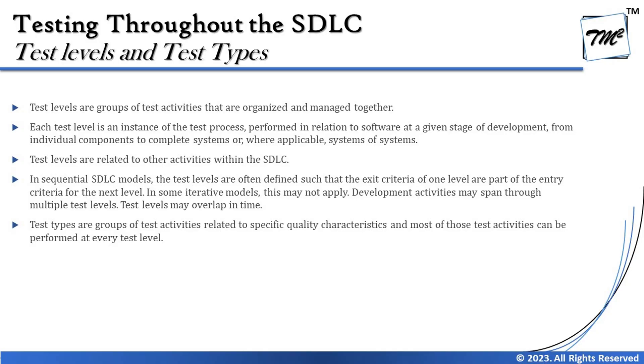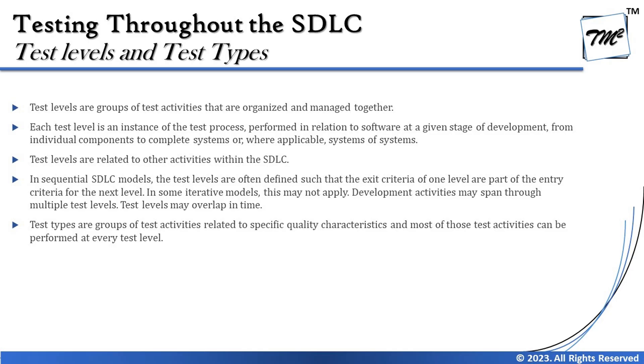Each test level is an instance of the test process itself, performed in relation to software at a given stage of development — from individual components to a complete system, or even systems of systems. All levels have a unique objective. As discussed in our previous topic, one good practice of testing states that every test level must have a unique objective specific to that level, concentrating on something very specific about the application.